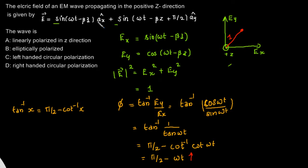The electric field vector is going to rotate in the clockwise direction. If we keep our left-hand thumb along the direction of propagation — that is, out of the screen — then our fingers curl in this direction. So this is left-hand circular polarization.